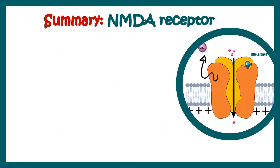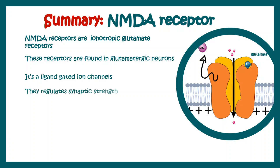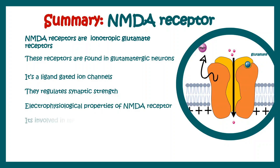Overall, in this video we looked at NMDA receptors — how they are one kind of ionotropic glutamate receptor found in glutamatergic neurons, acting as a ligand-gated ion channel that regulates synaptic strength. We also looked at their electrophysiological properties and how they are involved in memory and synaptic plasticity.